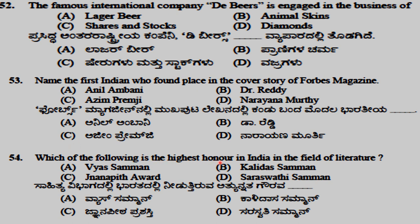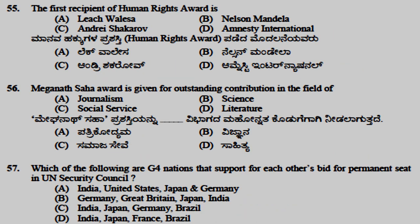The highest honor in India in the field of literature is the Jnanpith Award. The first recipient of the human rights award is Amnesty International. The Meghnad Saha Award is given for outstanding contribution in the field of science.